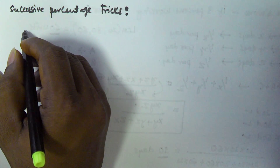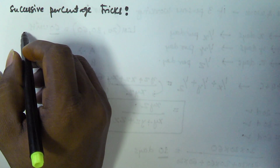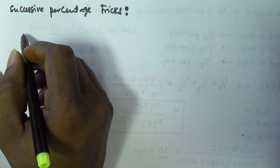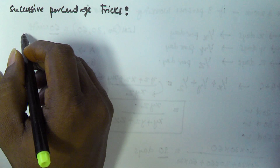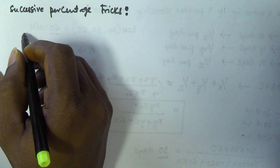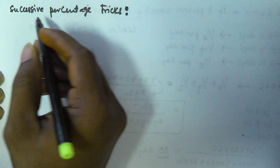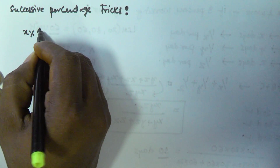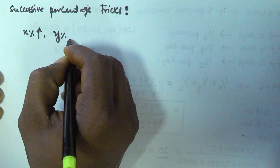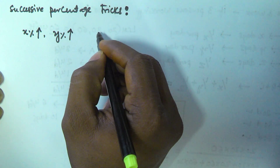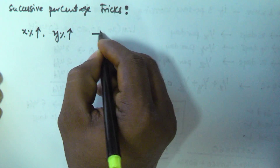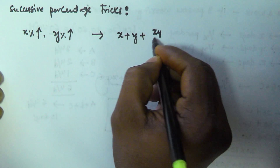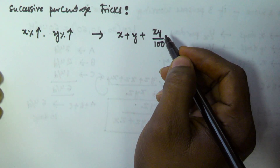Hello friends. In this video we will see: if a value is incremented by x percentage and then decreased by x percentage, what will be the overall percentage change? In the previous videos I have shown that if x percentage is incremented and then y percentage is incremented, the overall percentage change is given by x plus y plus xy by 100.